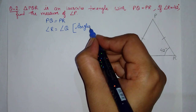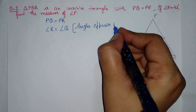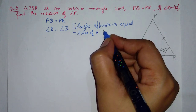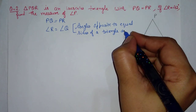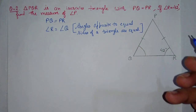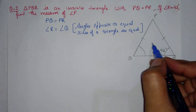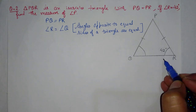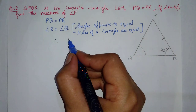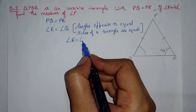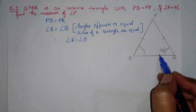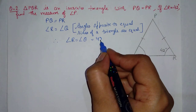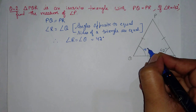Since the two sides are equal, these two angles also become equal. The reason is: angles opposite to equal sides of a triangle are equal. Now angle R and angle Q are equal to each other. We know angle R is 42 degrees, so therefore angle Q is also 42 degrees. Now I need to find angle P.